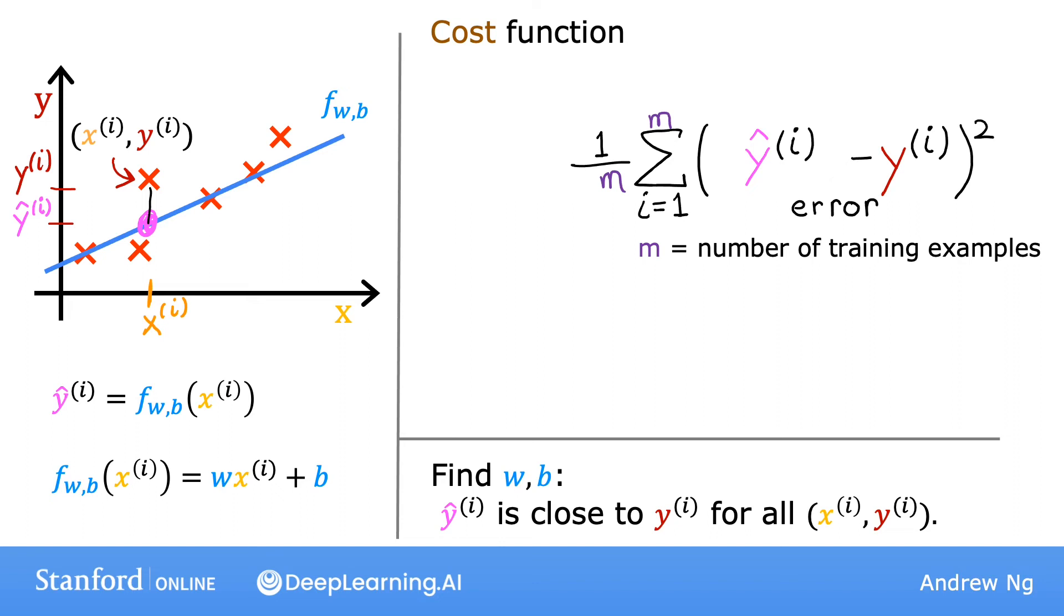By convention, the cost function that machine learning people use actually divides by 2 times m. The extra division by 2 is just meant to make some of our later calculations a little bit neater. But the cost function still works whether you include this division by 2 or not. So this expression right here is the cost function, and we're going to write j of wb to refer to the cost function.